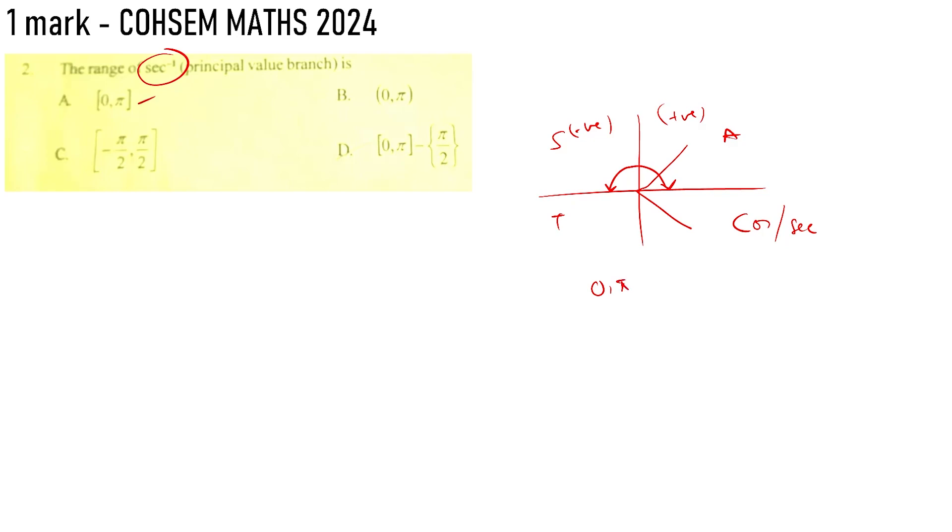The answer is 0 to pi. 0 to pi is closed interval, open interval, and pi by 2. Sec 90 is 1 by cos 90. Cos 90 is equal to 0. So it's not defined. So this is the answer, D.